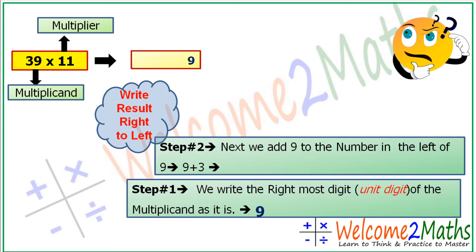Now let's see step 2. Step 2 is: next we add 9 to the number in the left of 9, that is 3. So 9 plus 3 is 12. But 12 is a two-digit number and we can write only a single digit in any place. So what to do now? Let's write 2 in tens place and 1 becomes a carry.